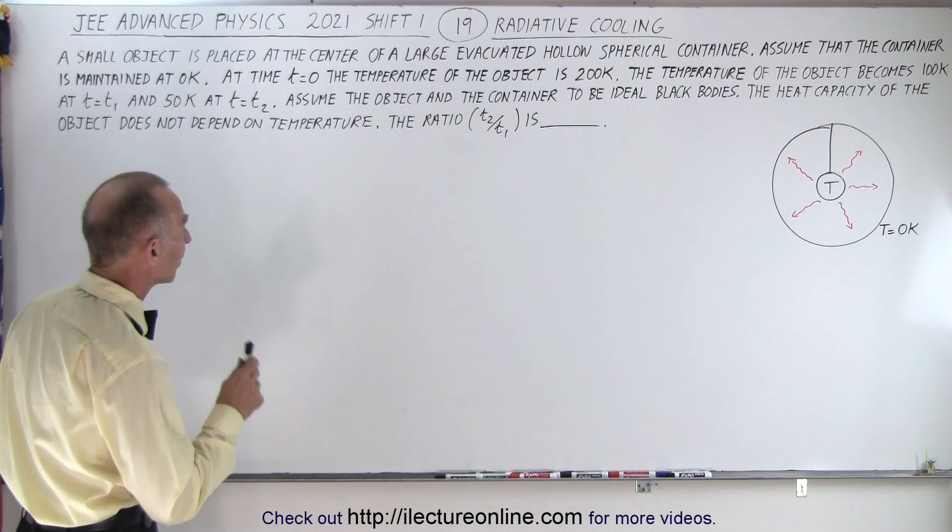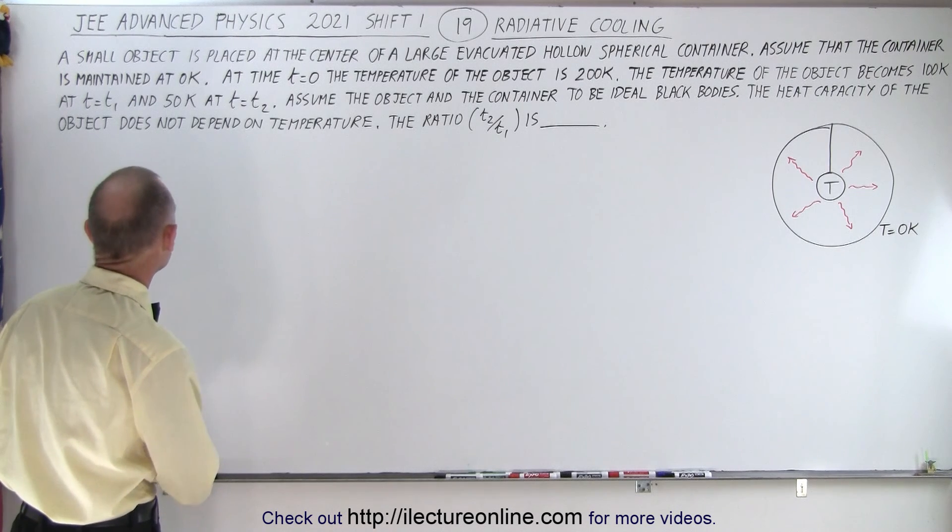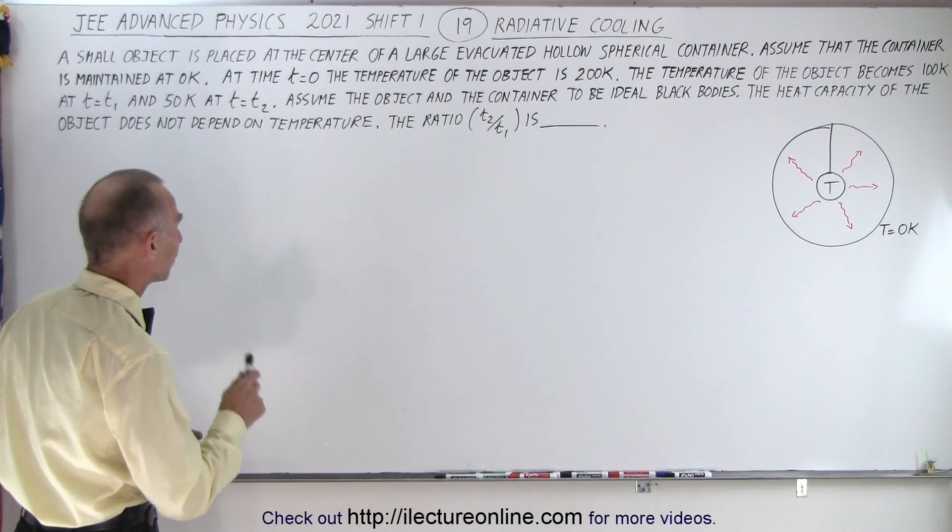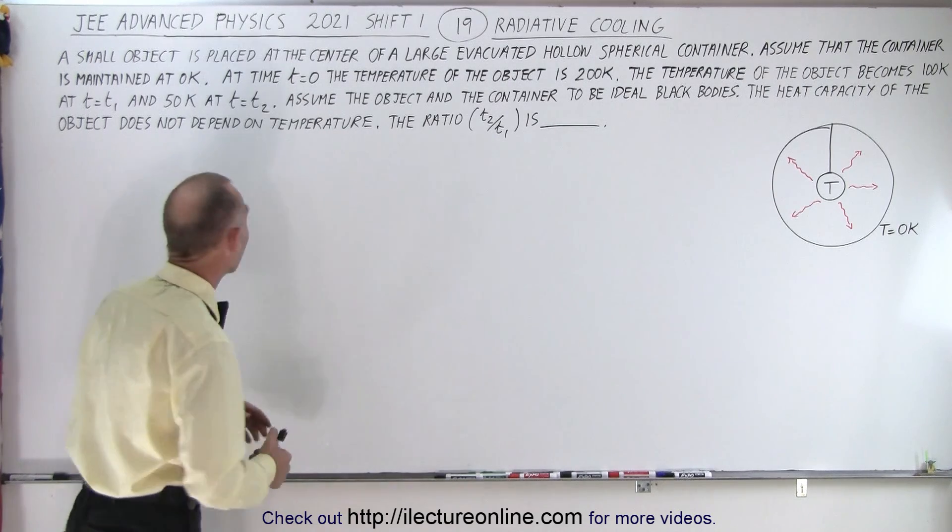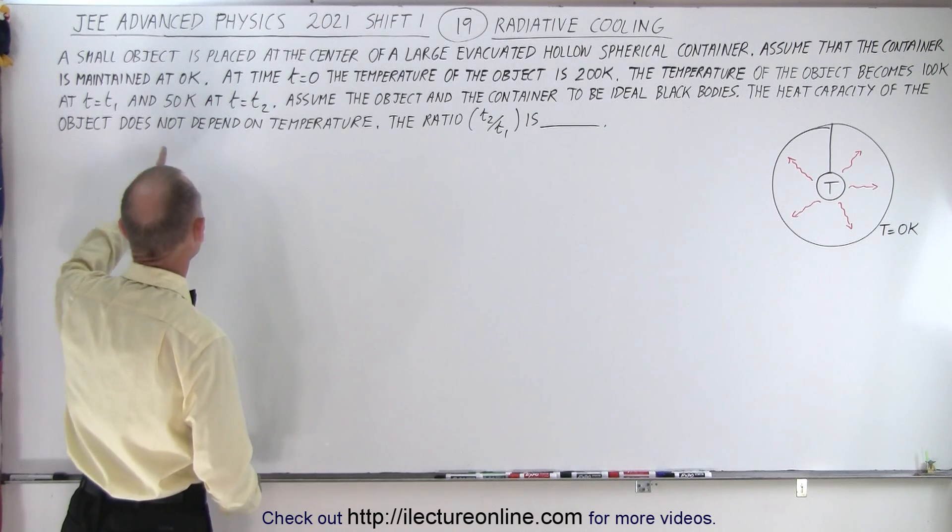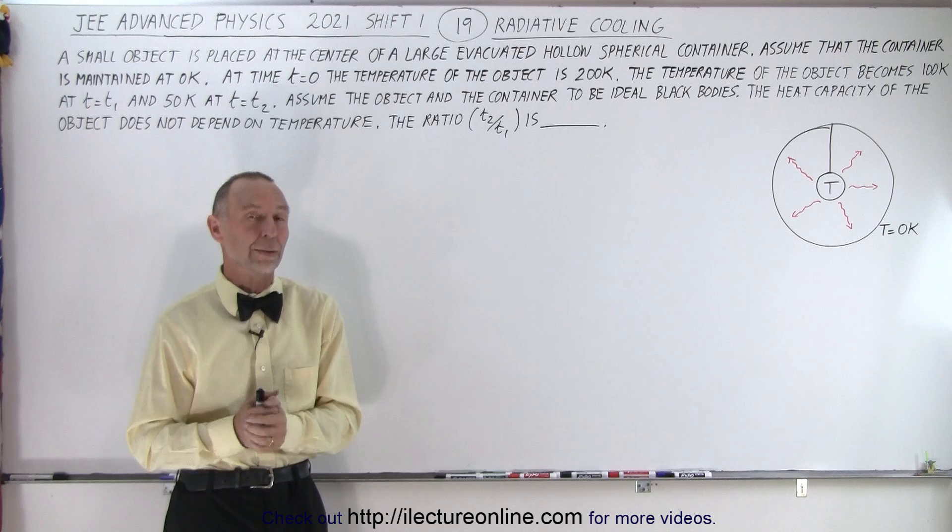Assume the object and container are ideal black bodies. The heat capacity doesn't depend on temperature. We're finding the ratio t₂/t₁—the time to go from 200K to 50K versus 200K to 100K. How do we start this problem?